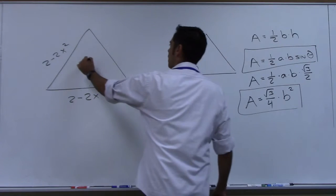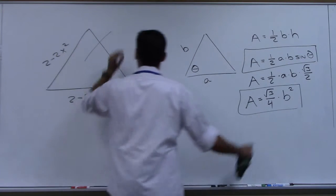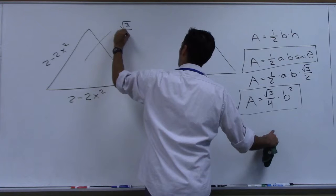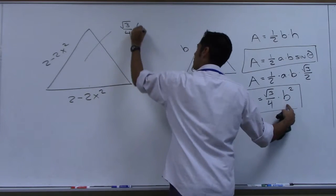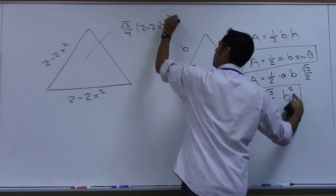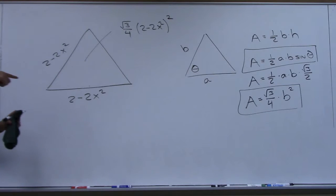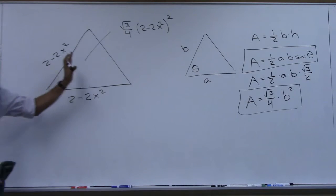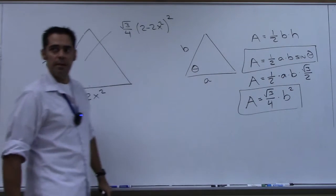So what's the area of this triangle, everyone? Root three over four times 2 minus 2x squared, squared. Now if you were to do it the other way with that right triangle, you will get the exact same expression. But it's much less work if we remember this formula.